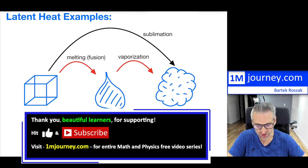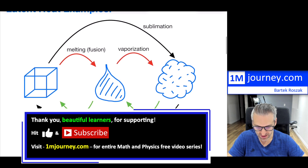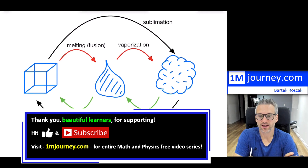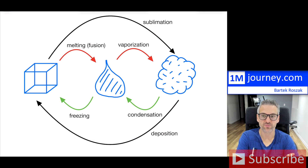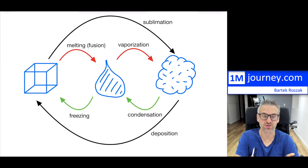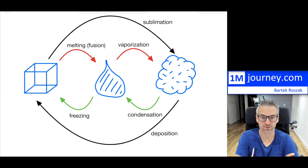So latent heat examples. Here's a little diagram before I jump into these examples. Latent heat is nothing else but the actual energy which allows you to change state. You're going to be changing state either from a solid — you see that on the left there as a cube — to a liquid, so that would be melting or fusion. You can be changing state from a liquid going to a gas, which is called vaporization, and then you can go in reverse: from a gas into a liquid, which would be condensation, and then freezing back from a liquid to a solid.